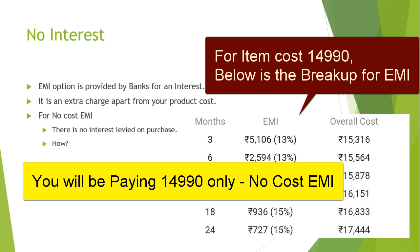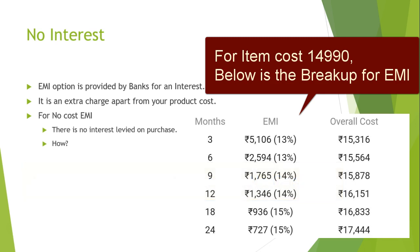Banks don't directly do this on their own — this option is offered by the product sellers to increase sales. If many people are interested in buying a product but cannot afford the heavy cost, offering no cost EMI means more people can afford it. Even a person with a net income of 20,000 can buy a 60,000 item paying just 5,000 a month, so the purchasing capacity of people improves. That is what is called no interest EMI or no cost EMI.